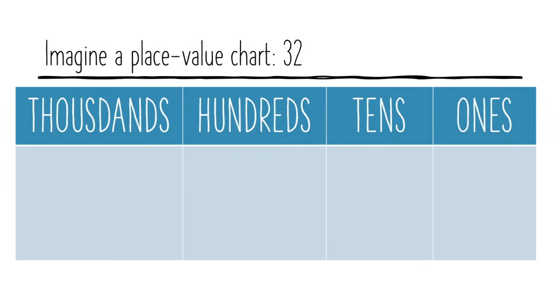Now I want you to imagine a place value chart. I'm going to represent our first number 32 on the chart. In 32 there are three tens and two ones.